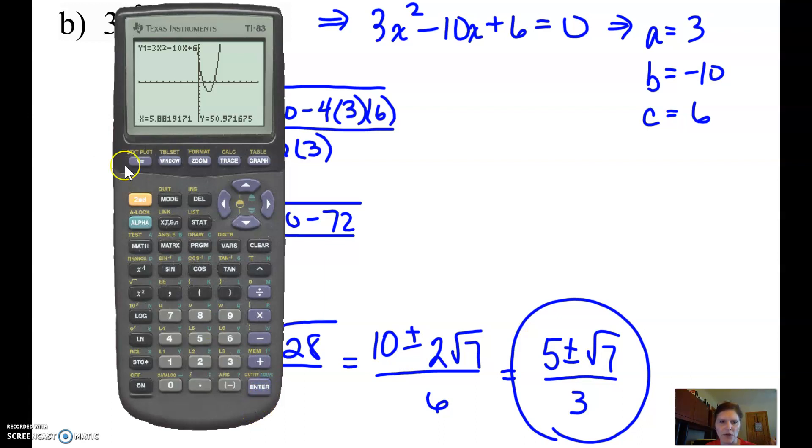Parentheses, 5 plus square root of 7, close that, and divide by 3. There we go. So I hit something wrong. My y value is 0. Once I have confirmed that the plus 1 works, I know the minus 1 is going to work, so you really only have to check one of these.